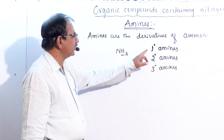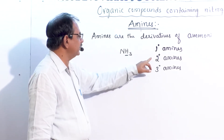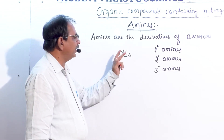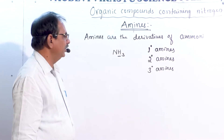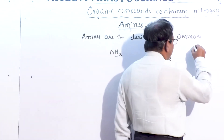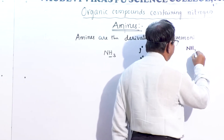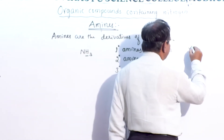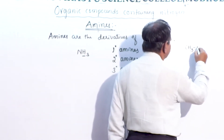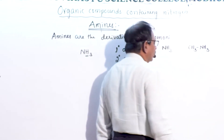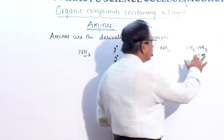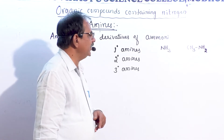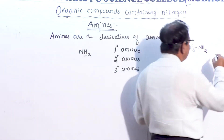Amines are classified only on the basis of the number of hydrogen atoms replaced by alkyl or aryl groups. For example, in NH3, if one hydrogen atom is replaced by a methyl group — only one alkyl group replacing one hydrogen atom — then CH3NH2 is formed, called methylamine.